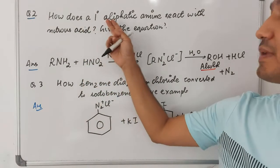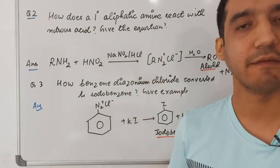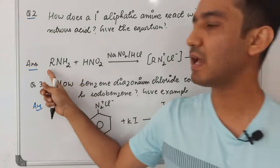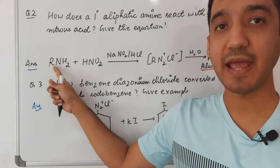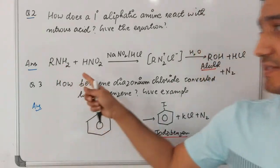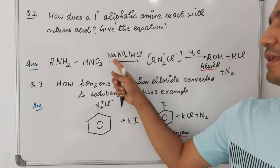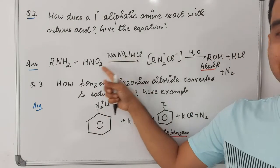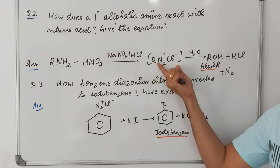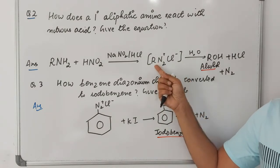Question two: how does a primary aliphatic amine react with nitrous acid? Suppose you have a primary aliphatic amine, RNH₂, reacting with nitrous acid. Nitrous acid is produced when NaNO₂ reacts with HCl. As a result, an intermediate diazonium salt is formed, but with the alkyl group this compound is unstable.